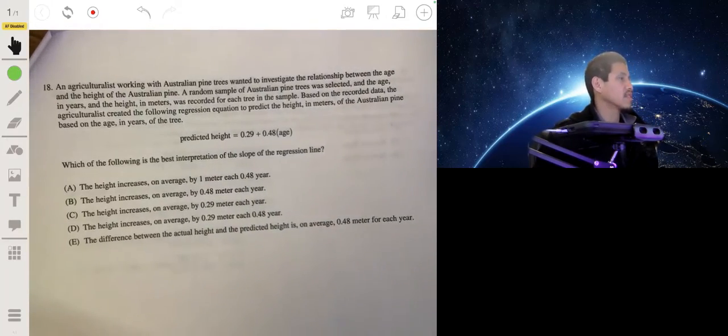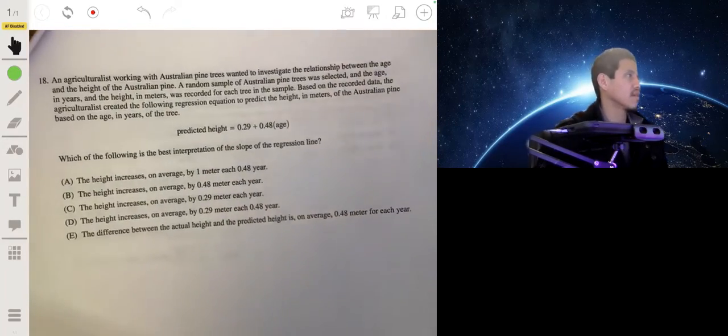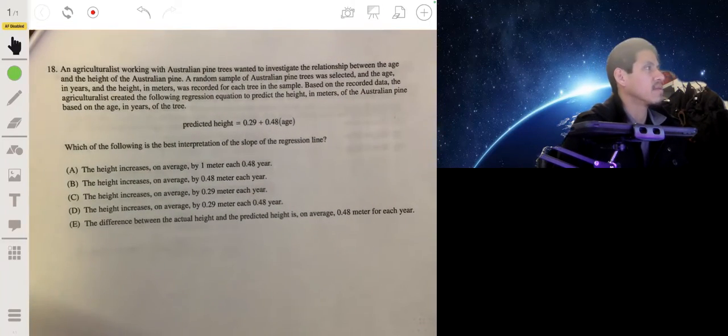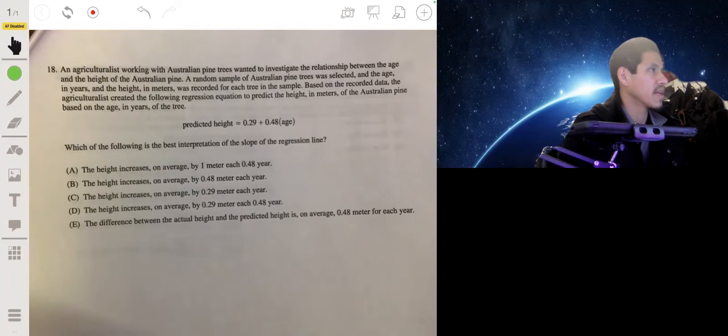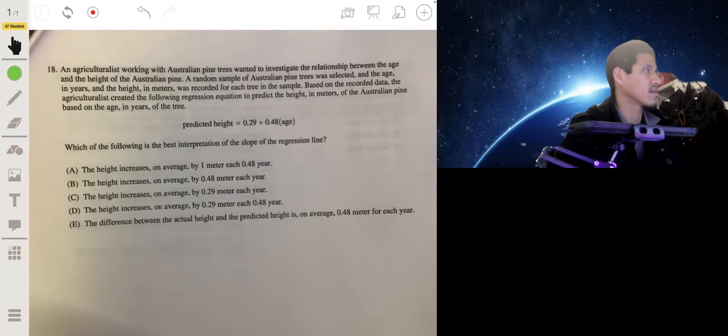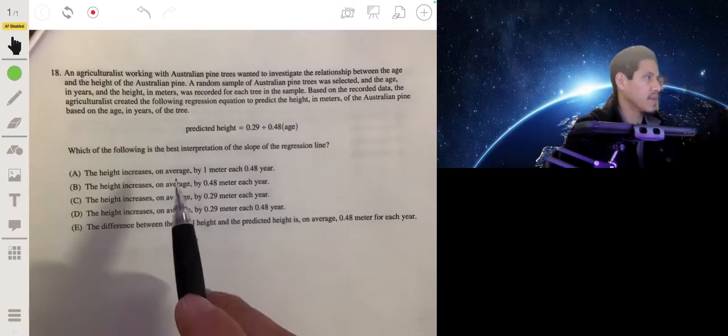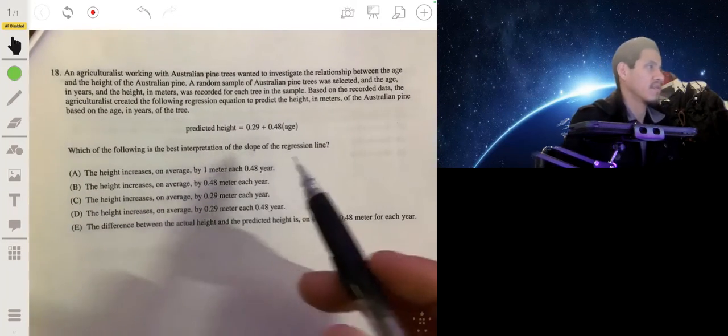Problem 18, an agriculturalist working with Australian pine trees, wanted to investigate the relationship between the age and the height of an Australian pine. A random sample of Australian pine trees were selected and the age in years and the height in meters were recorded for each tree in the sample. Based on the recorded data, the agriculturalist created the following regression equation to predict the height in meters of Australian pine based on the age in years of the tree. Which of the following is the best interpretation of the slope of the regression line?